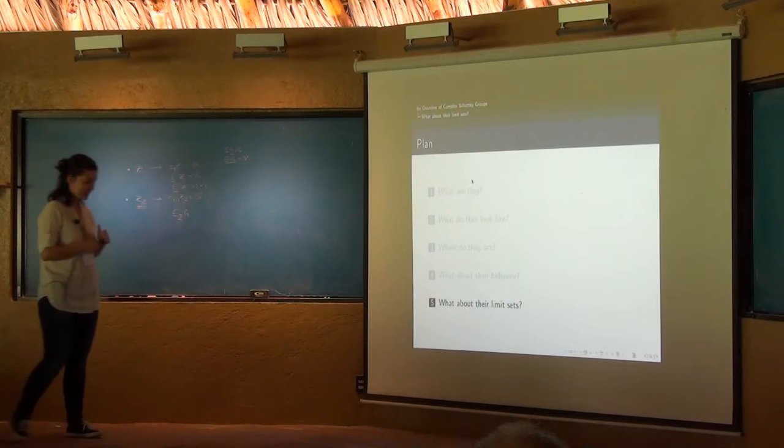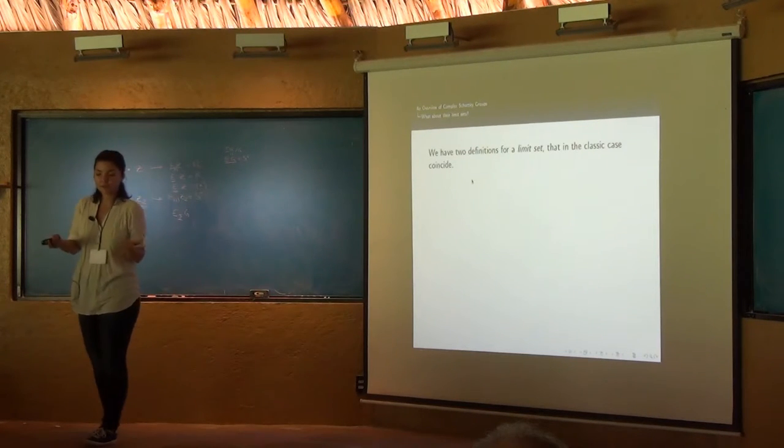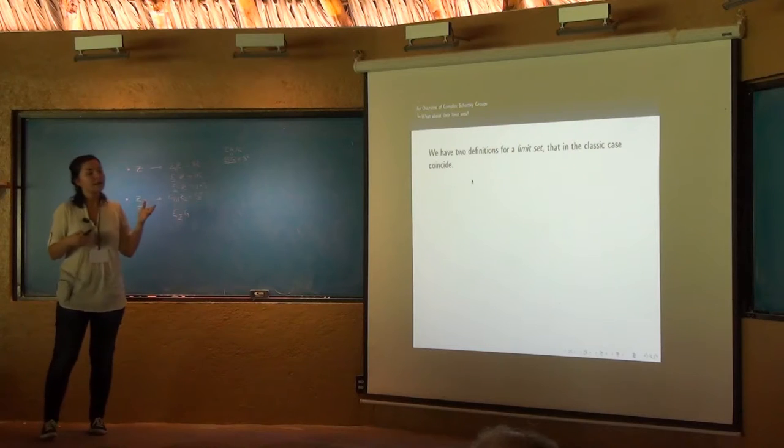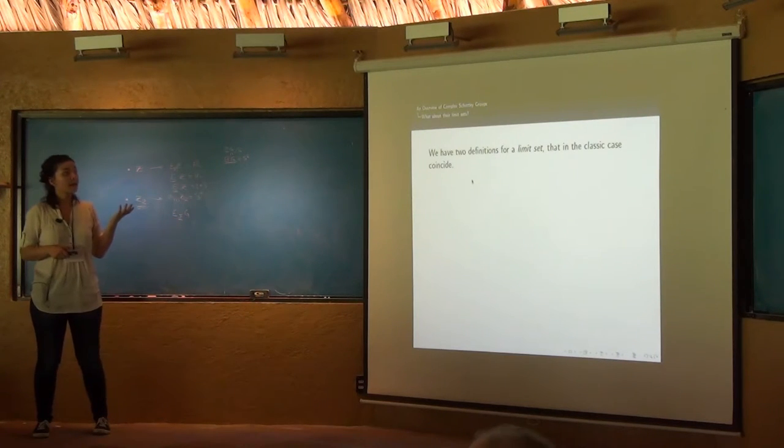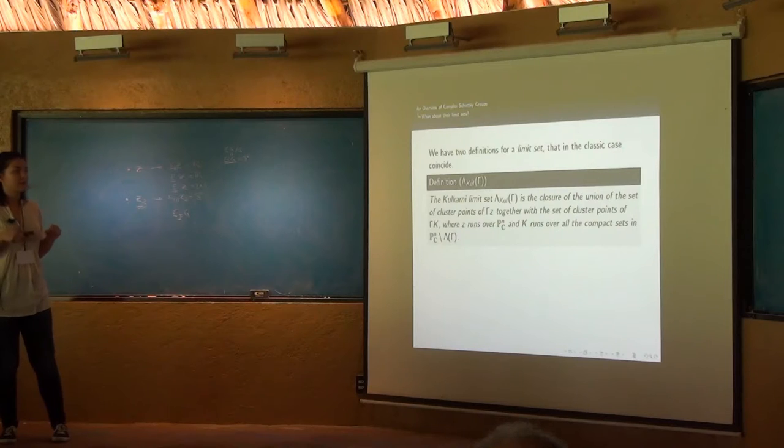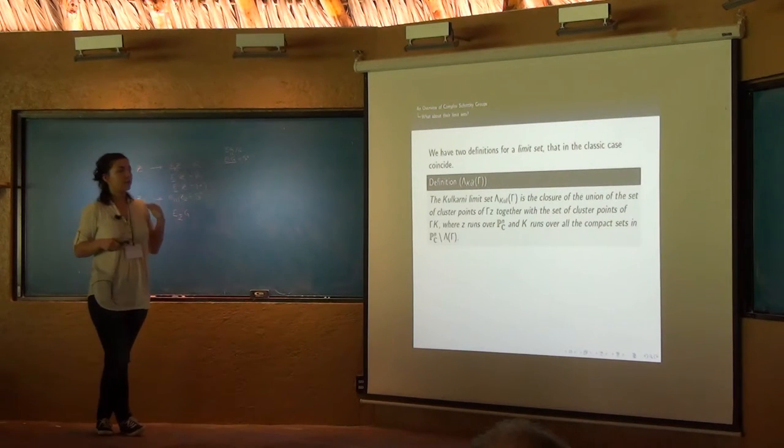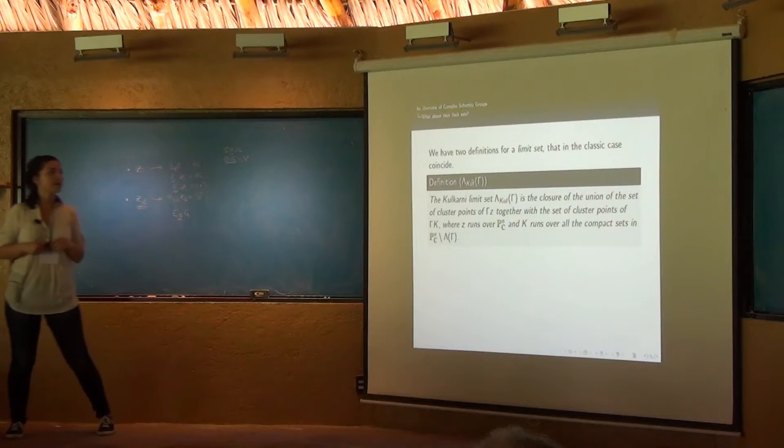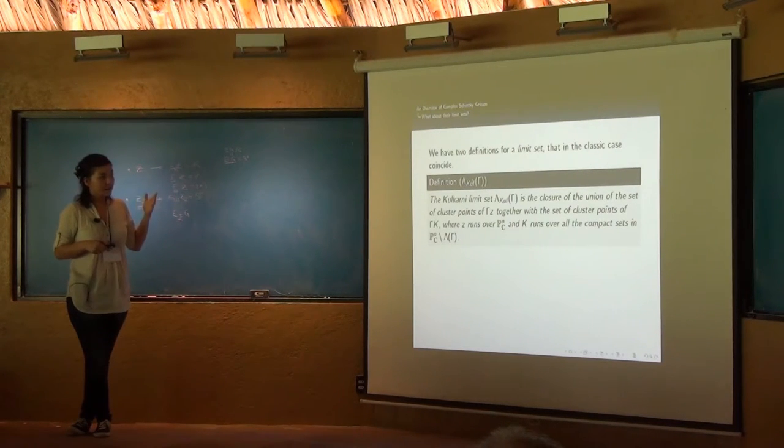So what about their limit sets? Here we have two definitions of limit sets. What we want to do is notice what difference exists between the classic case and the complex case of these groups. In the classic case, the two definitions that we have for limit sets coincide. This is the first definition, that it is the Kulkarni limit set. Valdemar told us this morning the complete definition. This is an abstract of this big definition.